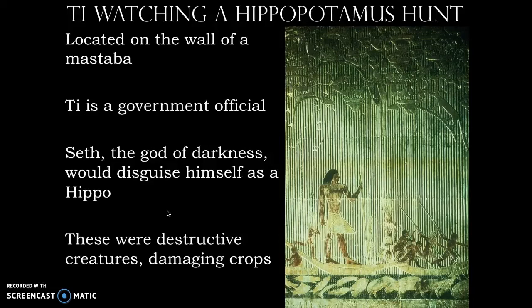Our final work of the Old Kingdom is Ti watching a hippopotamus hunt. This is located on one of the interior walls of a mastaba, and Ti is a government official. It's showing him during an official duty, which is killing hippopotamus — basically protecting the crops. We also have the god Seth, the god of darkness, who would many times disguise himself as a hippopotamus. Interestingly, going back to the Palette of King Narmer — Narmer had actually been killed by a hippopotamus. That was the end of his life.